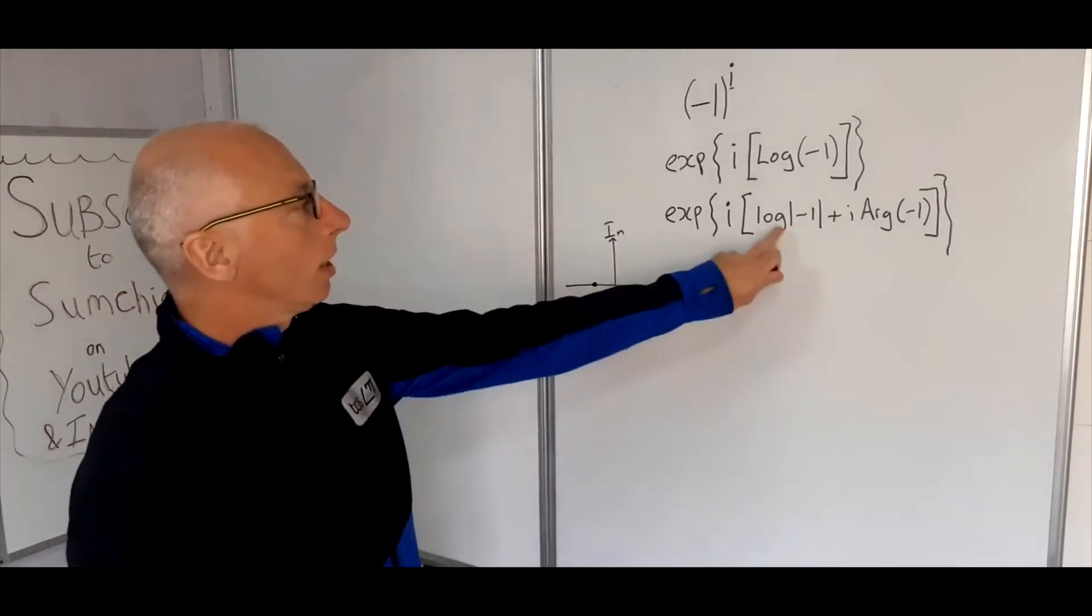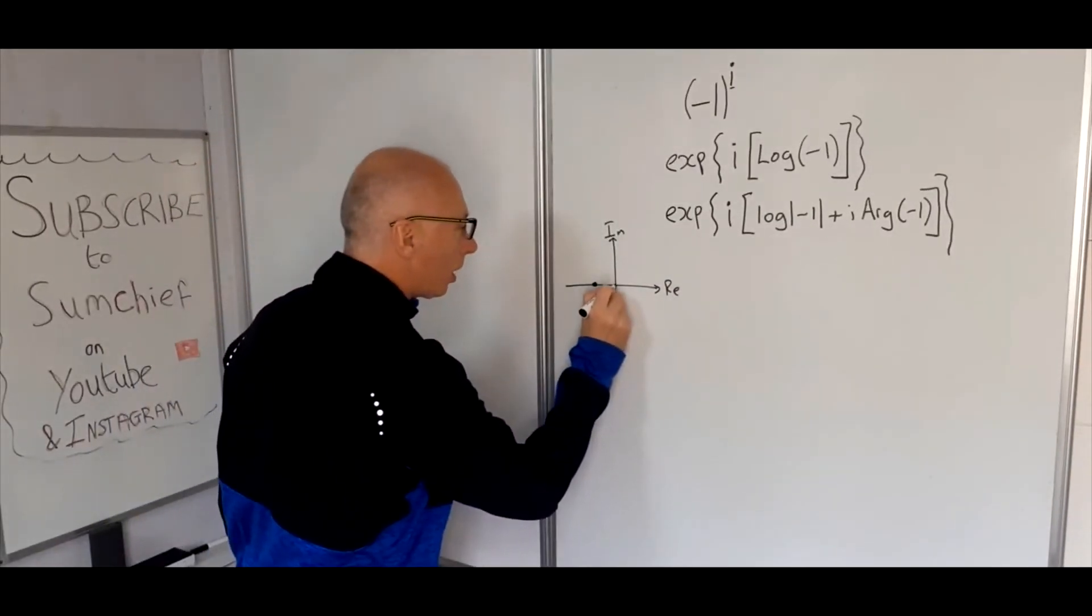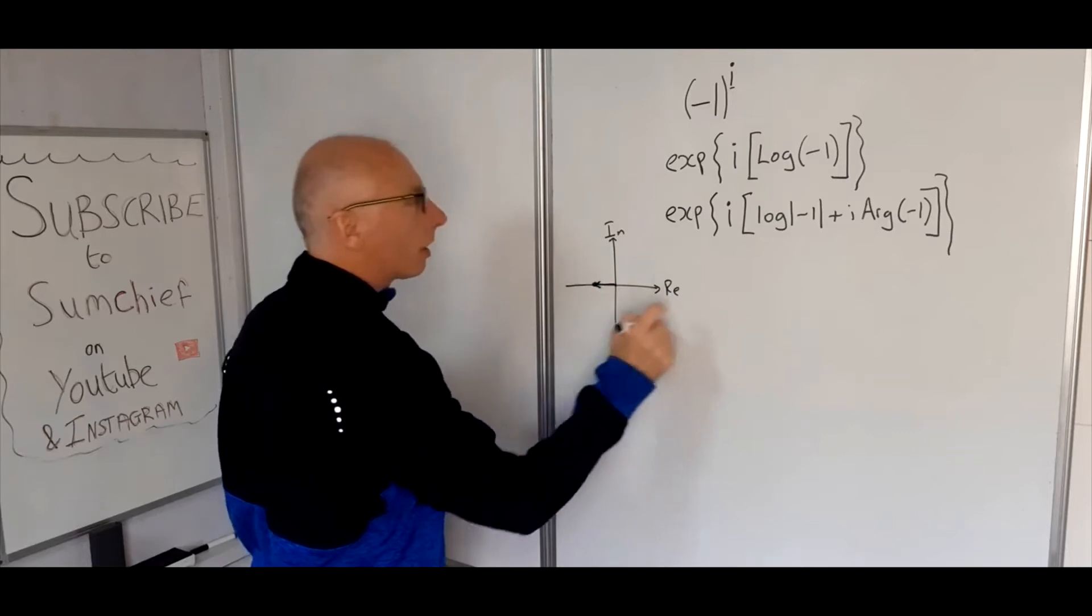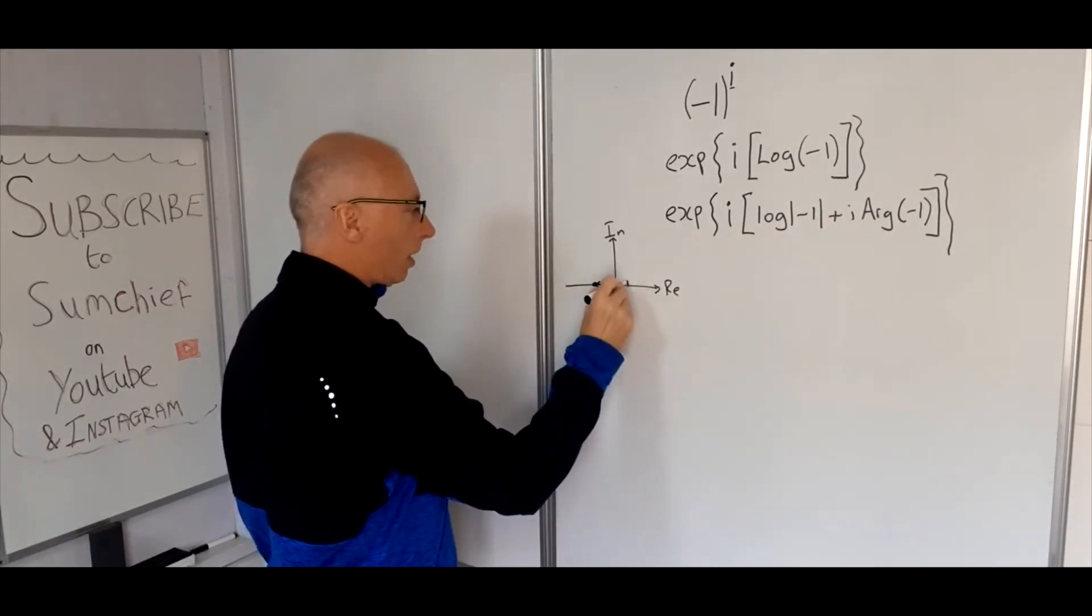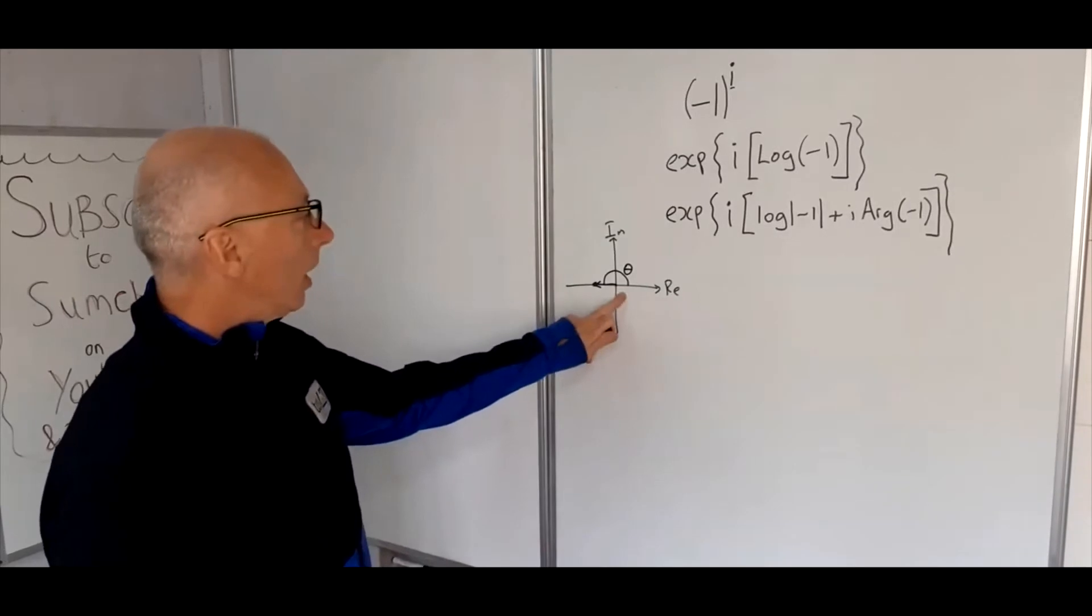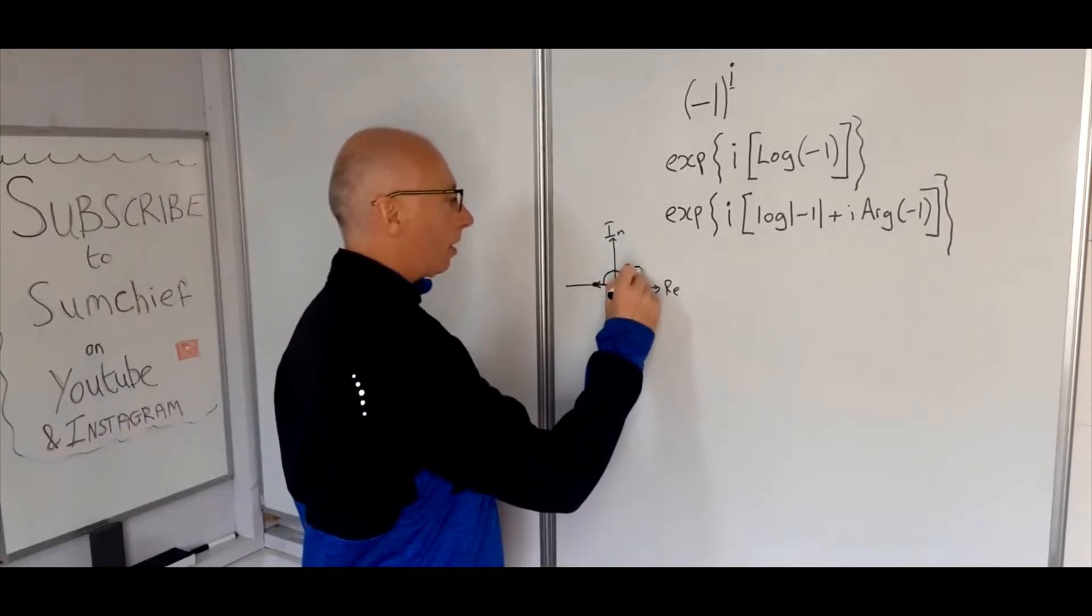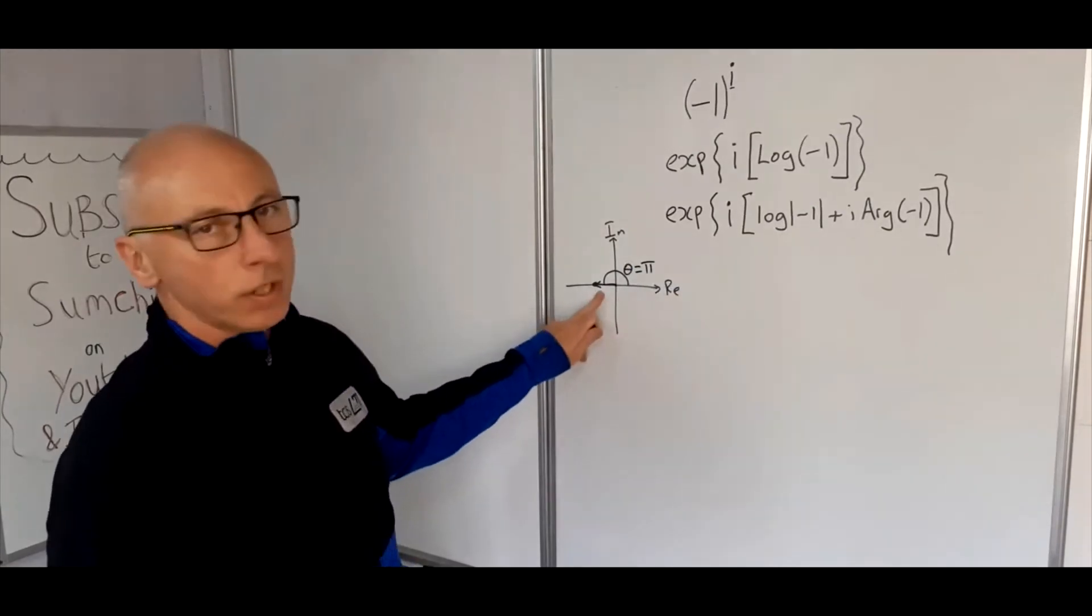So what we're interested in to work out this is from the origin, the length of this line, and then the argument from the positive real axis. So what we're interested in is this angle here. Well, we can see that this angle here is pi and the radius is obviously one.